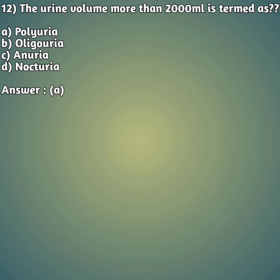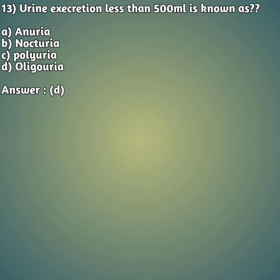Twelfth question: urine volume more than 2000 ml is termed as — option A: polyuria, option B: oliguria, option C: anuria, option D: nocturia. Your right answer is option A — polyuria. 'Poly' means many, so if a person is excreting more than 2000 ml per day, that condition is termed polyuria.